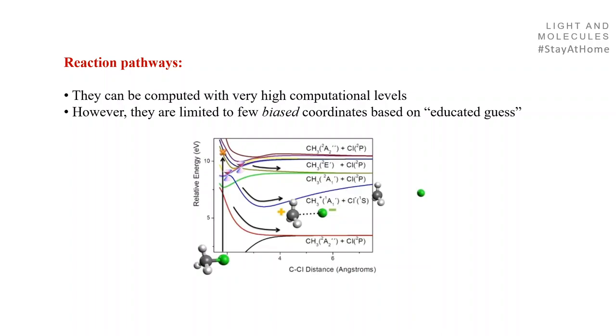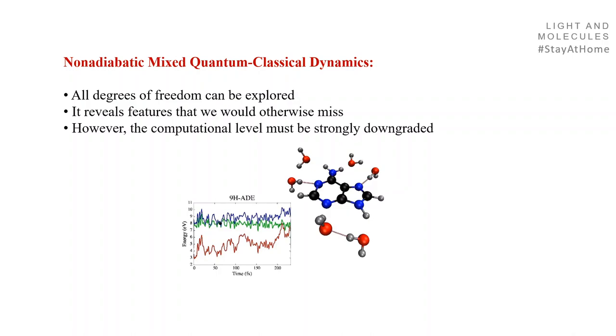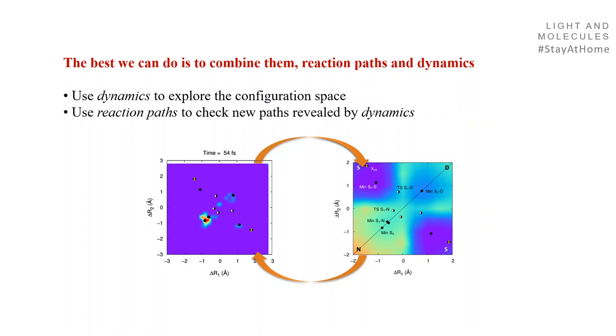On the other hand, non-adiabatic mixed quantum-classical dynamics is full dimensional and reveals features that we would otherwise miss. However, you have to degrade the method, and sometimes strongly degrade. The best you can do is combine them - use dynamics to explore the configurational space and use reaction pathways to check the new pathways revealed by the dynamics. The second step of using reaction pathways at high level to check the dynamics is sometimes missing in the literature.